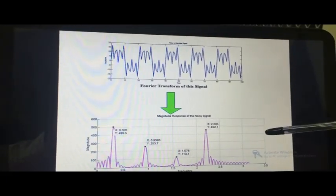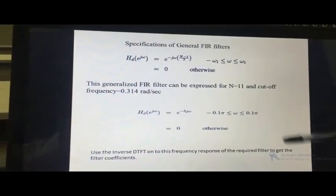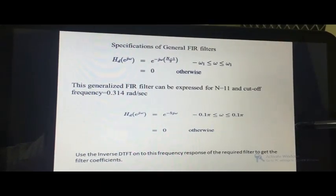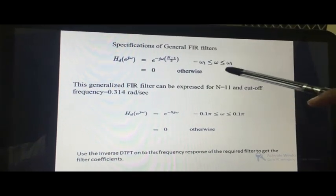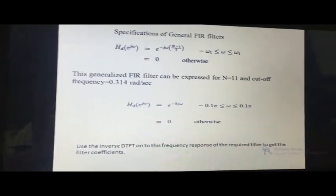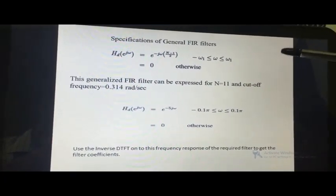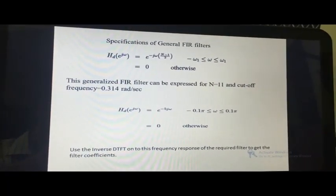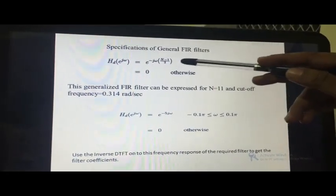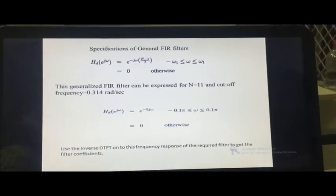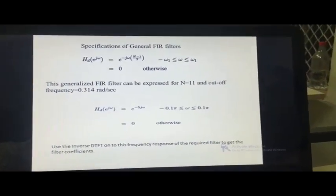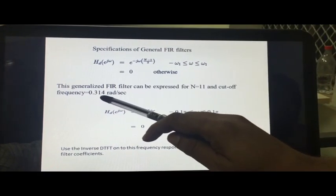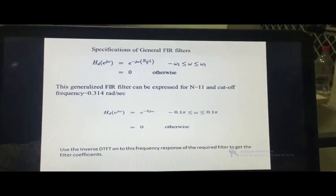Let us look briefly at the design of the digital FIR filter. The desired frequency response Sd(e^jω) can be expressed as e^(−jω(n−1)/2) for ω from −ω₁ to +ω₁, where ω₁ is the cutoff frequency. The term (n−1)/2 is called the center of symmetry, which arises when shifting the infinite impulse response to the right to make the system causal, resulting in a linearized phase. For our application, the cutoff frequency is 50 hertz — the normalized value 0.314.